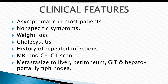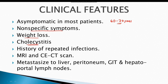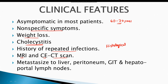Most patients are asymptomatic in early disease. At the late stage of 60 to 70 years, the tumor is either incidentally discovered or the patient presents with nonspecific symptoms such as abdominal pain, nausea, vomiting, loss of appetite, weight loss, and a history of repeated attacks of cholecystitis or right hypochondrial pain. MRI and contrast-enhanced CT scan of the abdomen establish the extent of the tumor, and definitive diagnosis is based on the histological report of the biopsy.